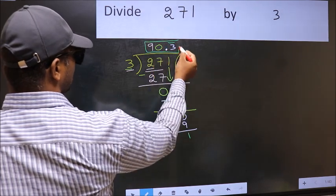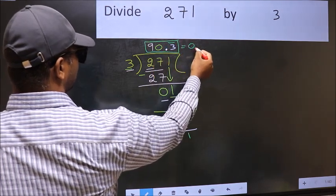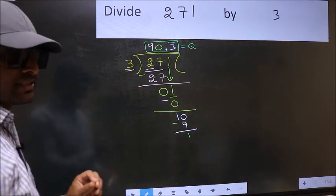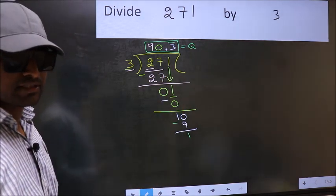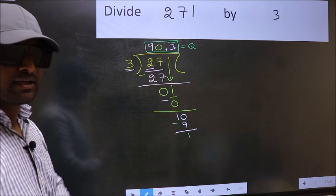So this is our quotient. Did you understand where the mistake happens? You should not make that mistake.